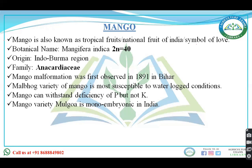Mango can withstand the deficiency of phosphorus, but mango cannot withstand the deficiency of potassium. You know potassium and phosphorus both are the macronutrients.